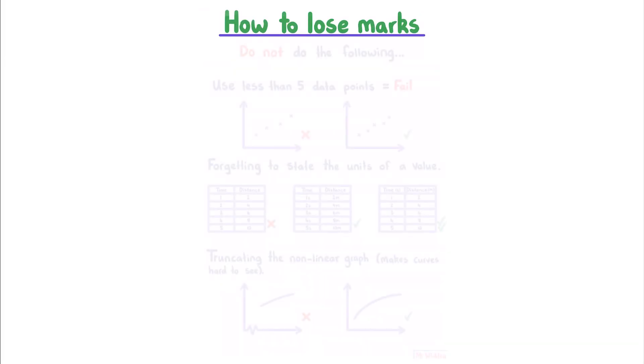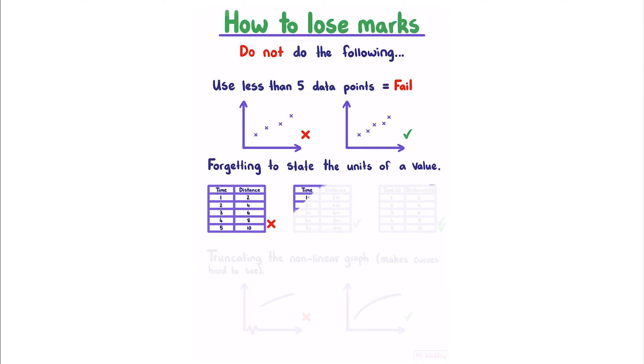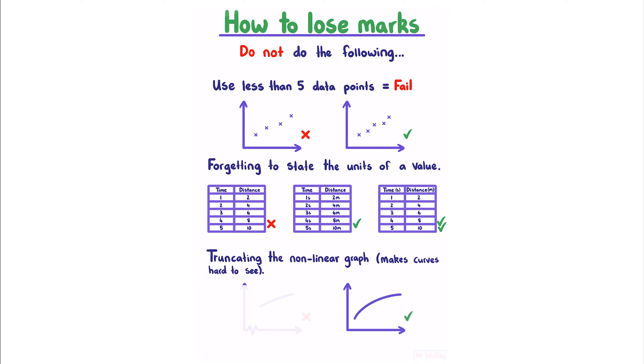How to lose marks. In your assessment, do not do the following. Using less than 5 data points will result in a fail. This is specifically noted in the standard, and is not something even your teacher can forgive. Forgetting to state the units of a value. For example, if in your data table you just write the numbers, you should at least write units for each variable, or if you want to be more fancy, you could just write it up the top. Truncating the non-linear graph makes curves hard to see. For example, a trend like this, if you truncated, might instead look like this, which could look almost linear, or even lead you to the wrong relationship.